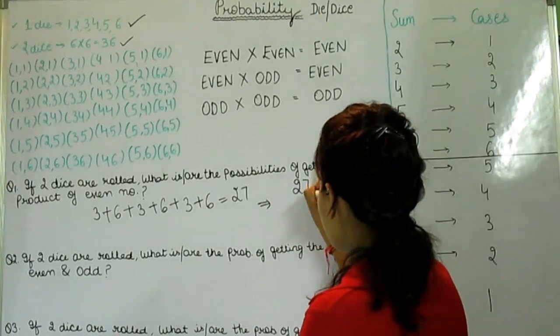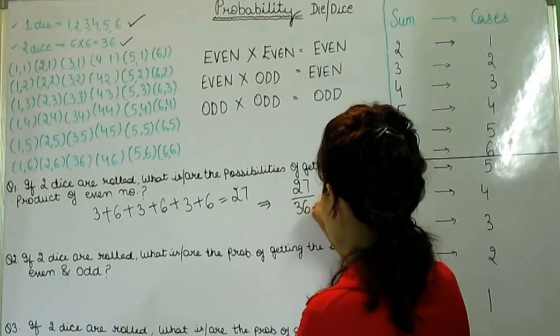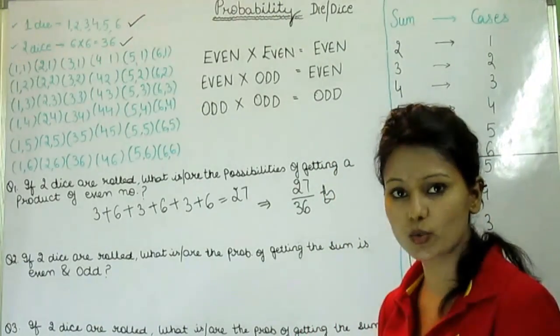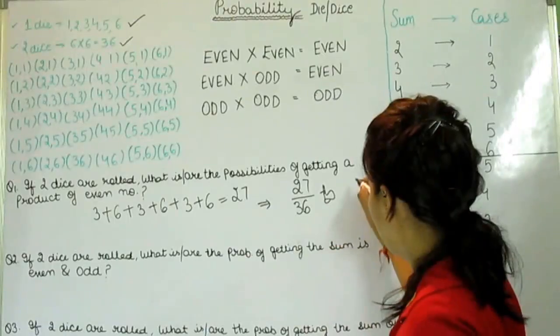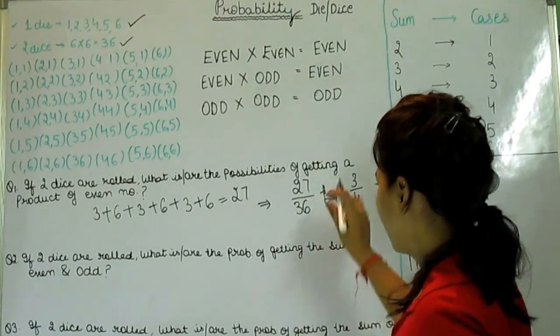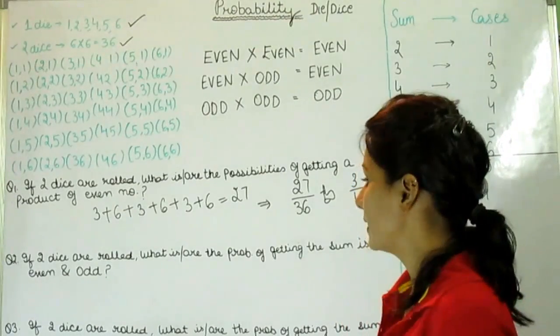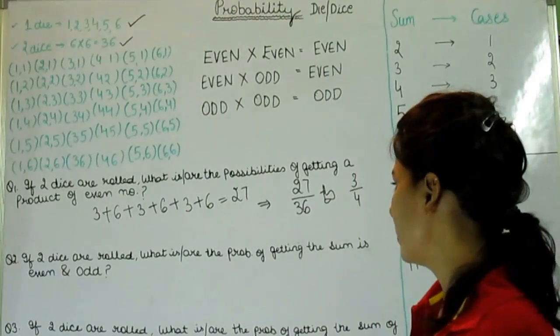So I have total 27 cases out of 36. This is the answer. If you are asked to get the exact answer, your answer would be 3 by 4. It can be divided by 9. So my answer is 27 by 36.